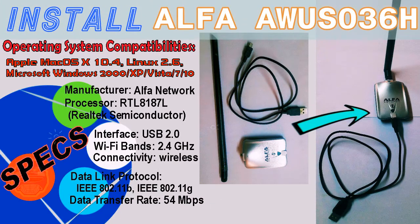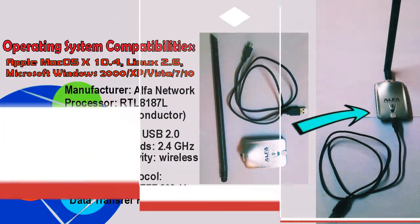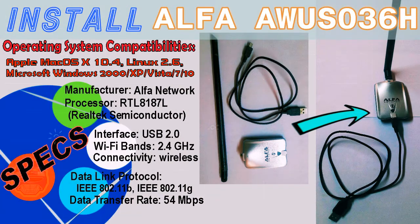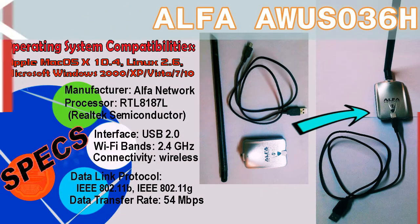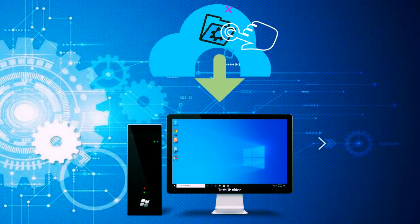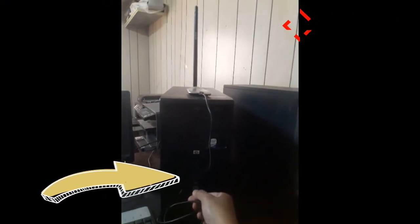Hi there my friends, welcome to TechShider and I will teach you on how to install on Windows 10 the Alpha AWS 36HA very useful network adapter. First you must download the installation file drivers below on this video description. Plug in the Alpha wireless network adapter to the computer. This network adapter uses USB 2.0; you will notice a green light if you plug in correctly. And the computer will not yet recognize this device.